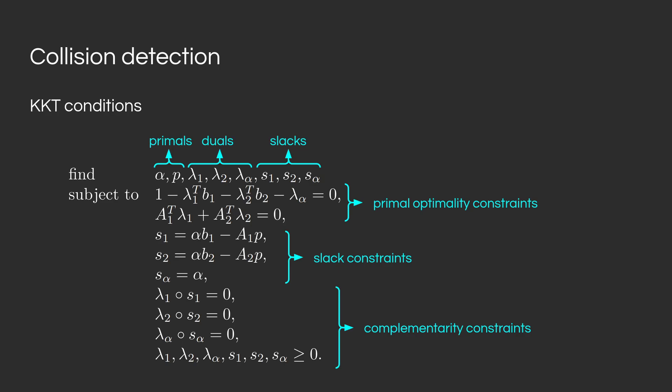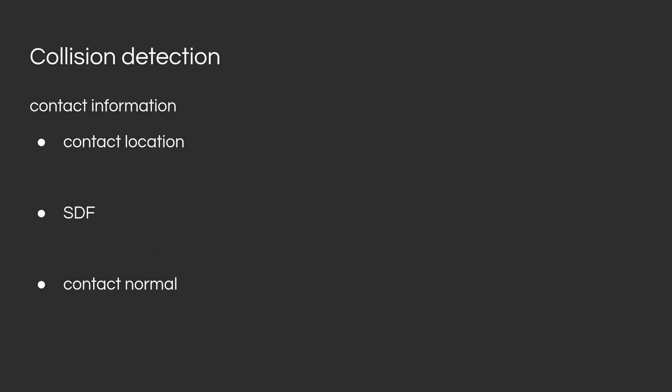When we solve the collision detection problem, we are interested in three quantities. The first one is the contact location P, which we have access to because it is an optimization variable. The second one is the signed distance function phi, equal to alpha minus 1, so we also have access to it after solving the optimization problem. The last one is the contact normal n, which can be obtained by differentiating through this optimization problem, very efficiently using the dual variables.